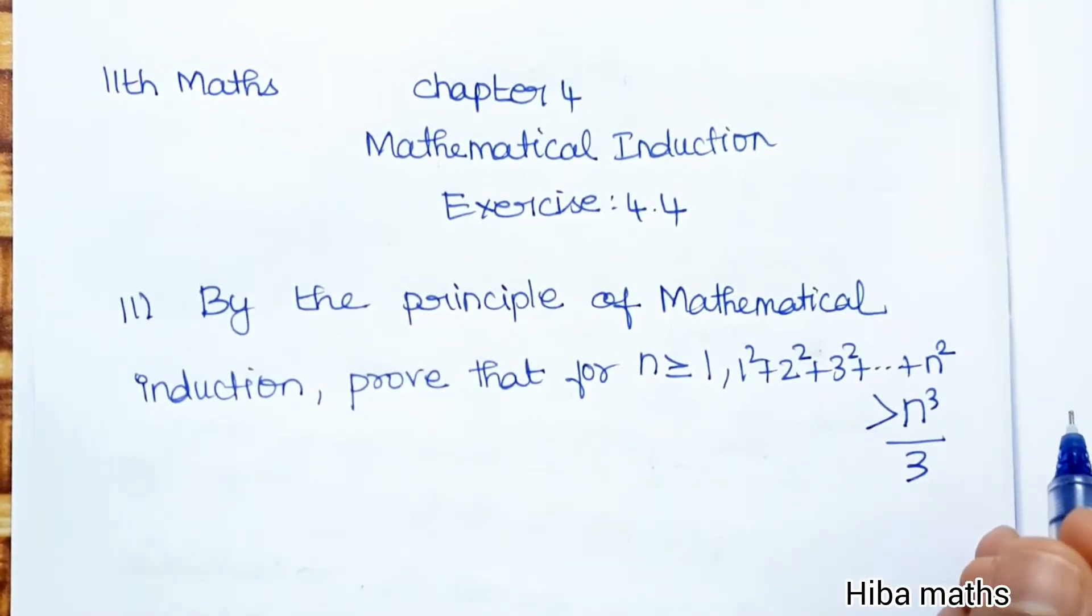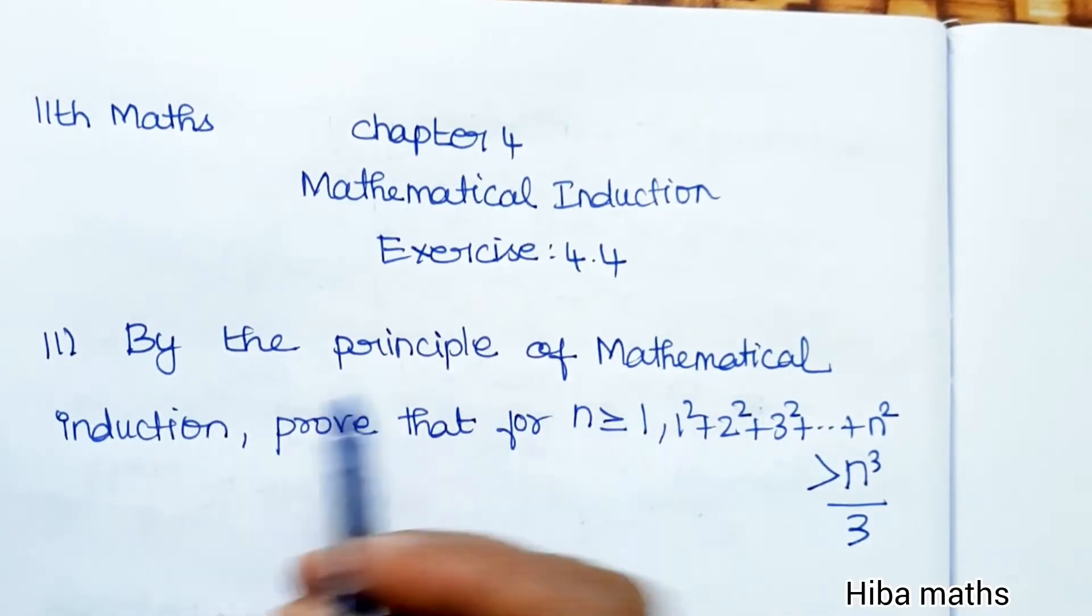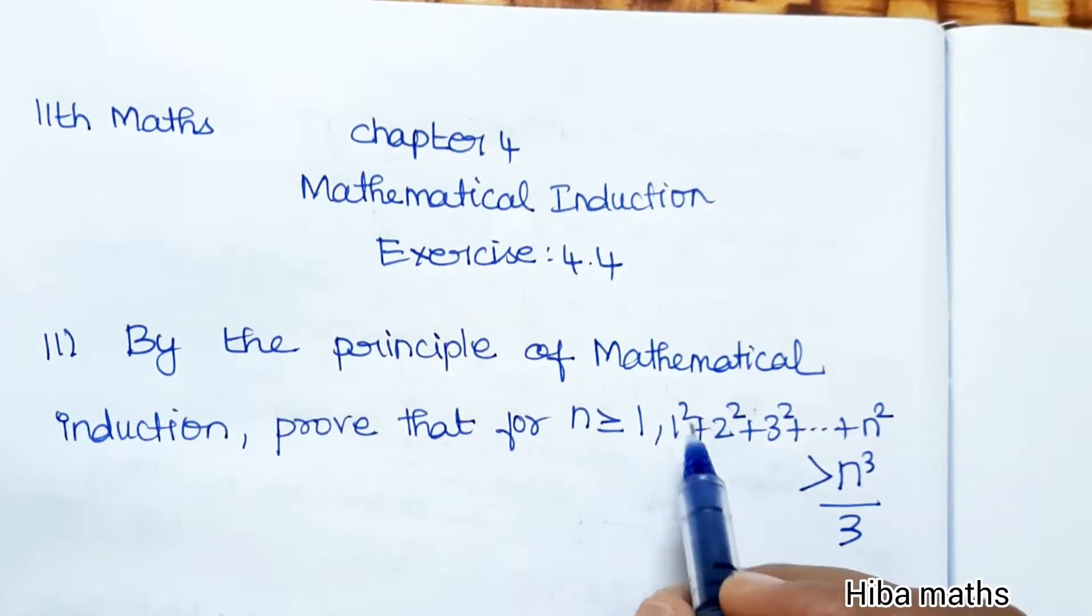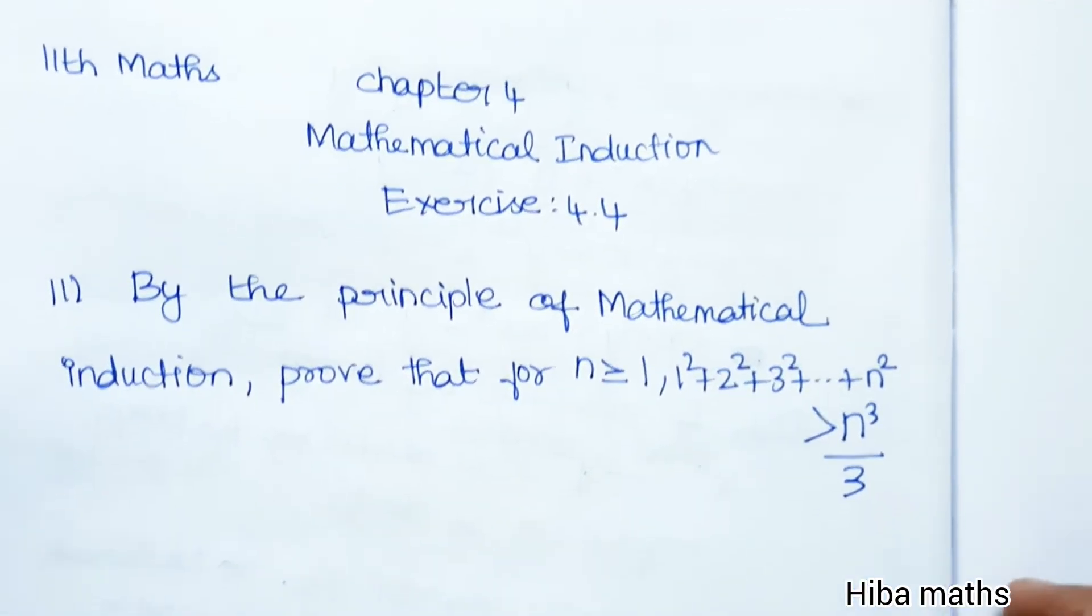Hello students, welcome to Hiba Maths. 11th standard maths, Chapter 4: Mathematical Induction, Exercise 4.4, Question 11. By the principle of mathematical induction, prove that for n ≥ 1: 1² + 2² + 3² + ... + n² > n³/3.